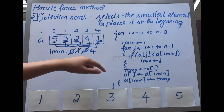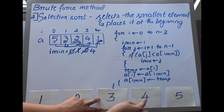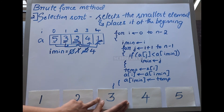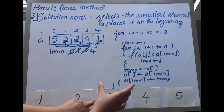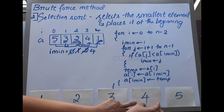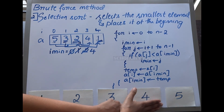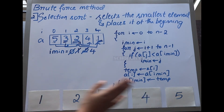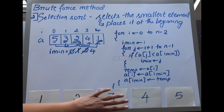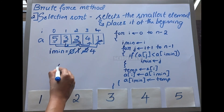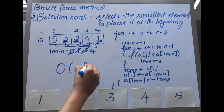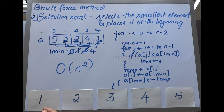The iteration continues: 3 is compared with 4 and 5, and 3 remains the minimum, so it stays in place. Then 4 is compared with 5, and 4 is the minimum, so it stays in its own position. At the end, all elements are sorted. The time complexity is O(n²), which is inefficient for larger lists.